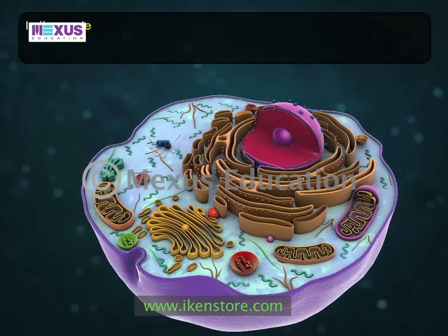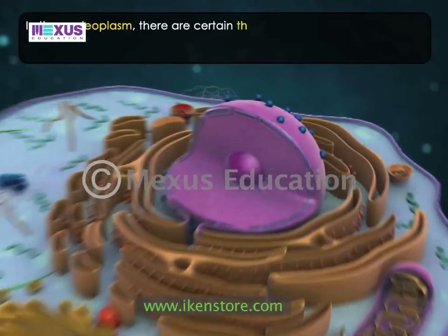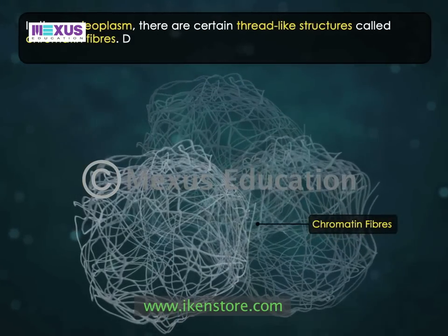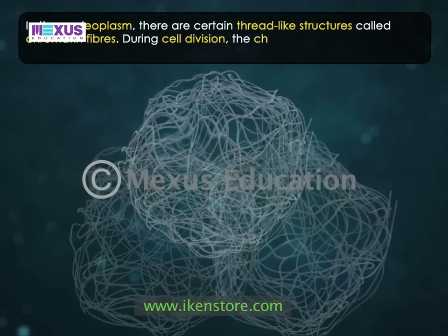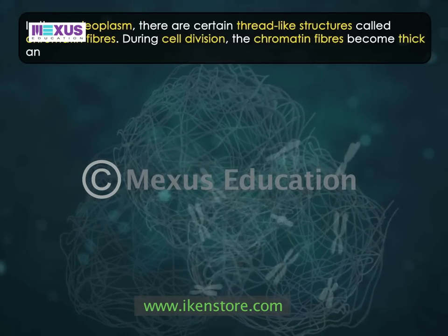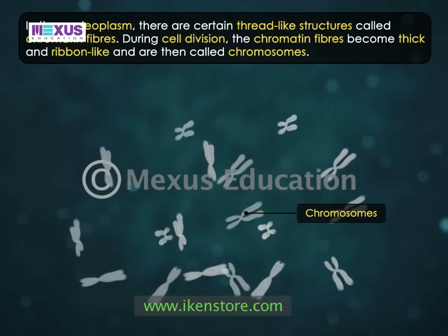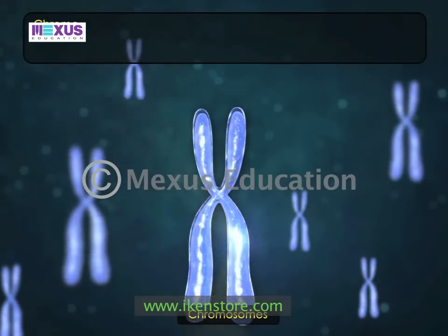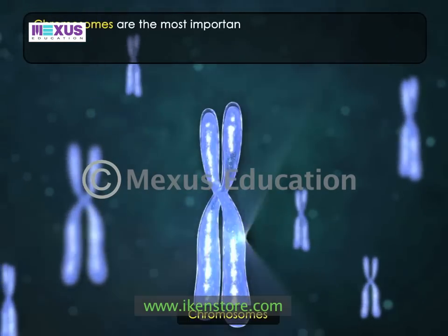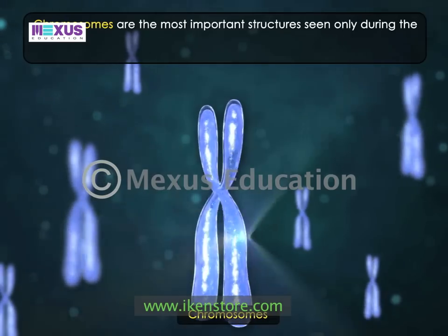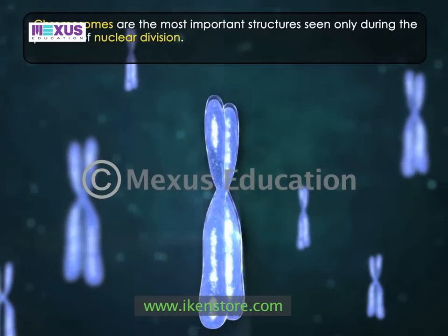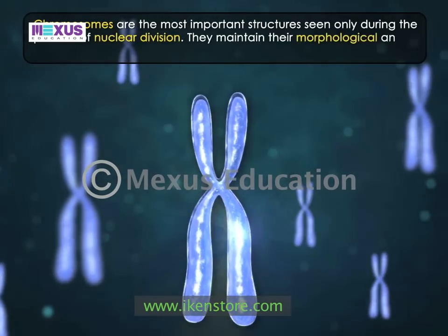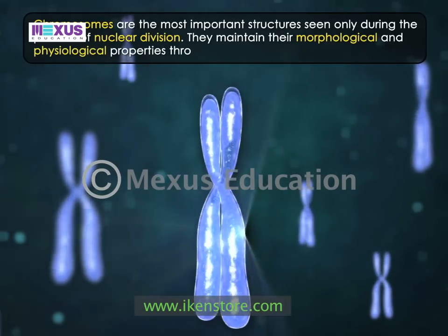In the nucleoplasm, there are certain thread-like structures called chromatin fibers. During cell division, the chromatin fibers become thick and ribbon-like and are then called chromosomes. Chromosomes are the most important structures seen only during the process of nuclear division. They maintain their morphological and physiological properties through successive divisions.